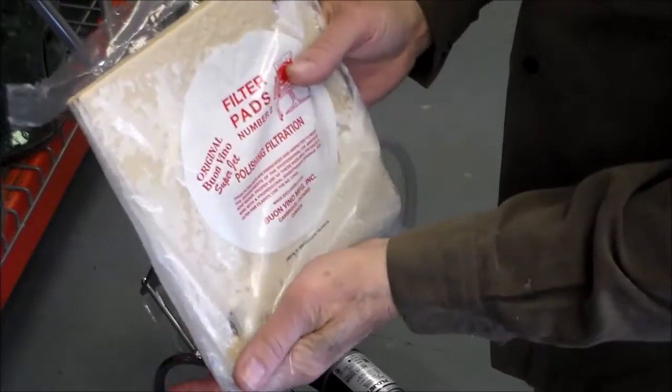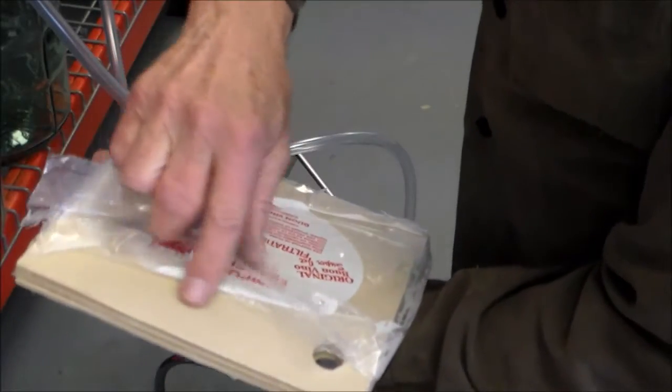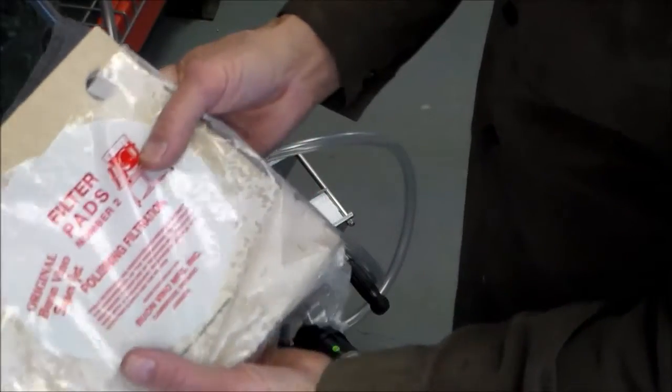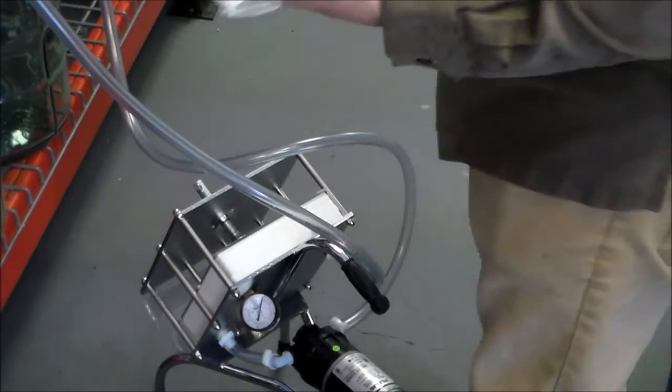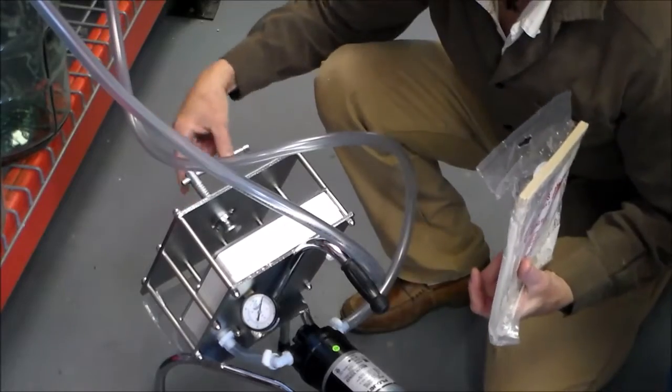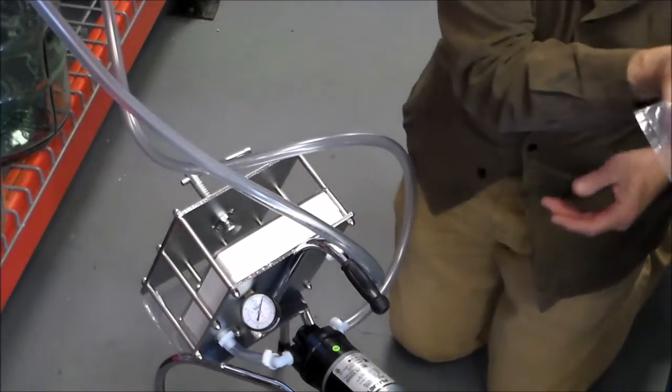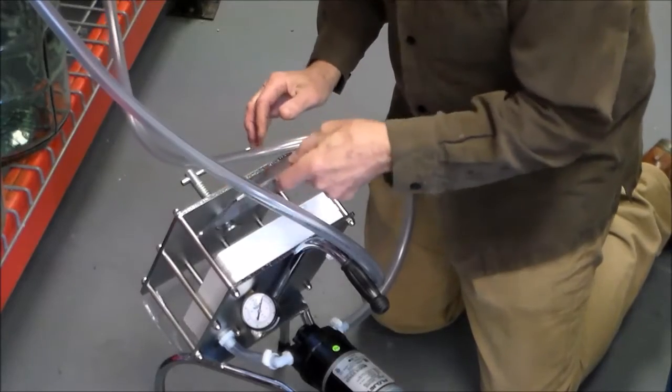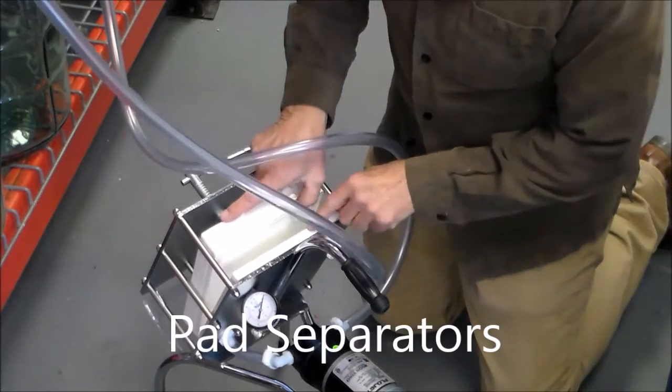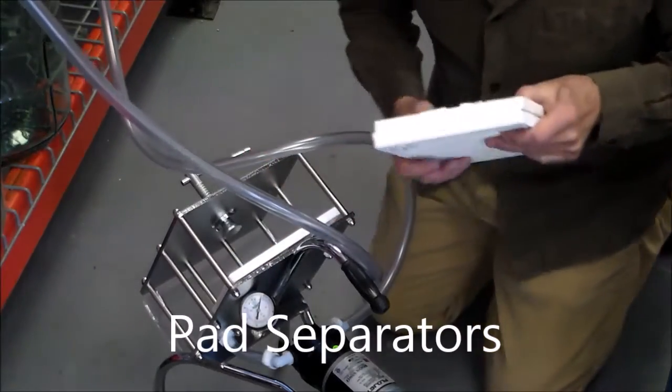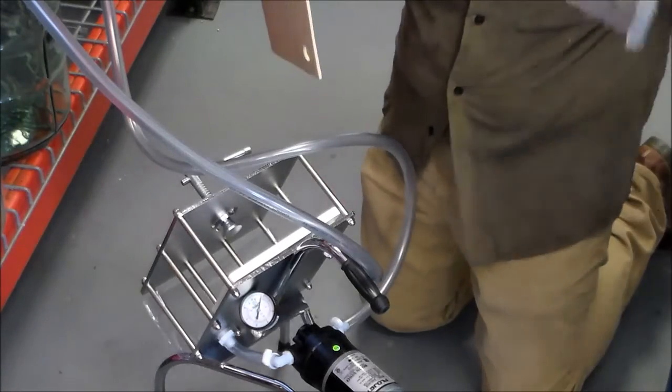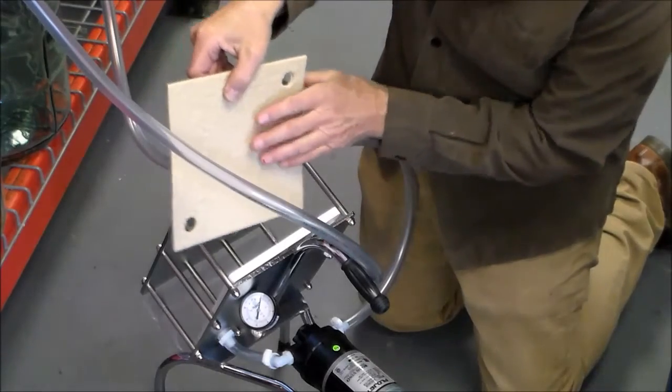Here these pads have soaked for over a minute. And you can see a pretty smooth side and then a real coarse side. The coarse side mounts towards the pump. So we're going to open this up. Here's the holding plate. And these three pads. Coarse side to the pump.